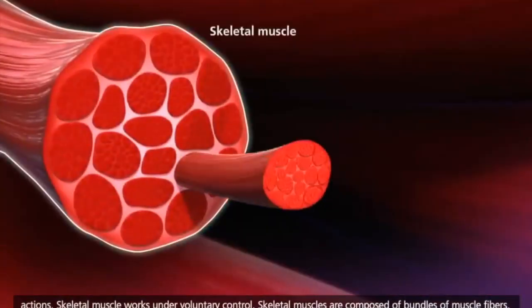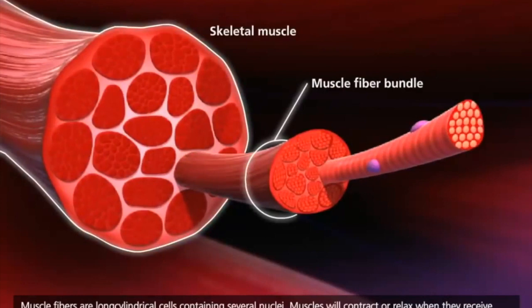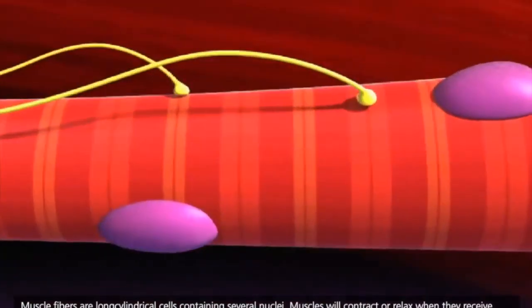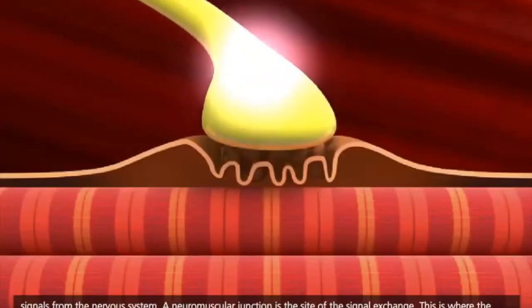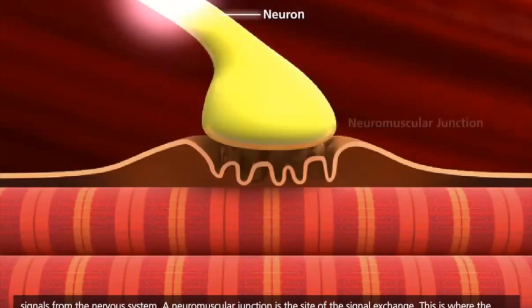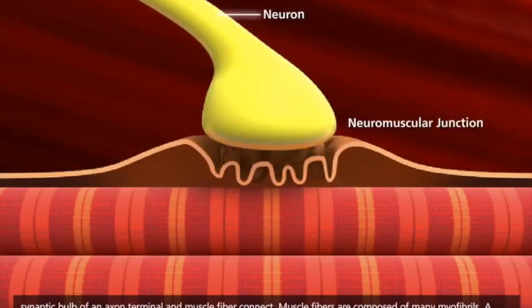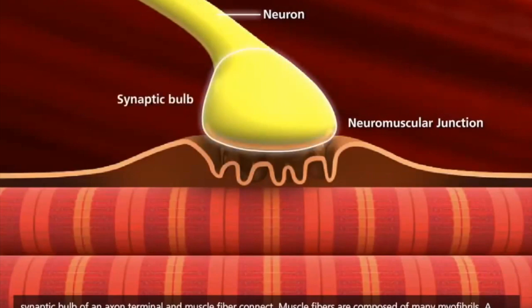Skeletal muscles are composed of bundles of muscle fibers. Muscle fibers are long cylindrical cells containing several nuclei. Muscles will contract or relax when they receive signals from the nervous system. A neuromuscular junction is the site of the signal exchange. This is where the synaptic bulb of an axon terminal and muscle fiber connect.